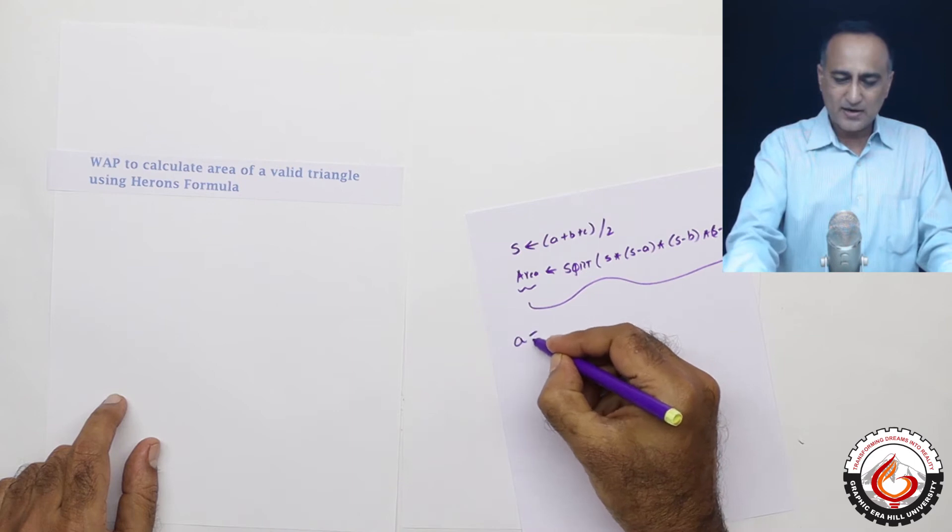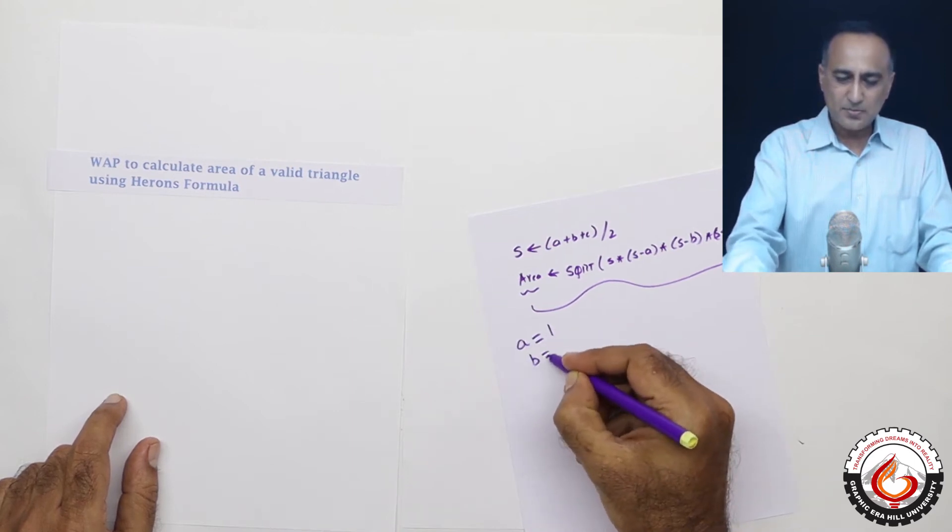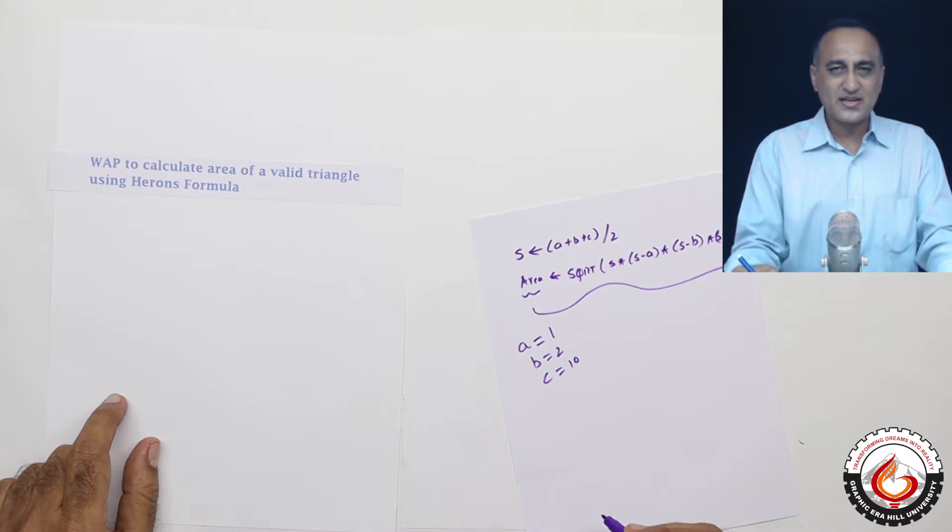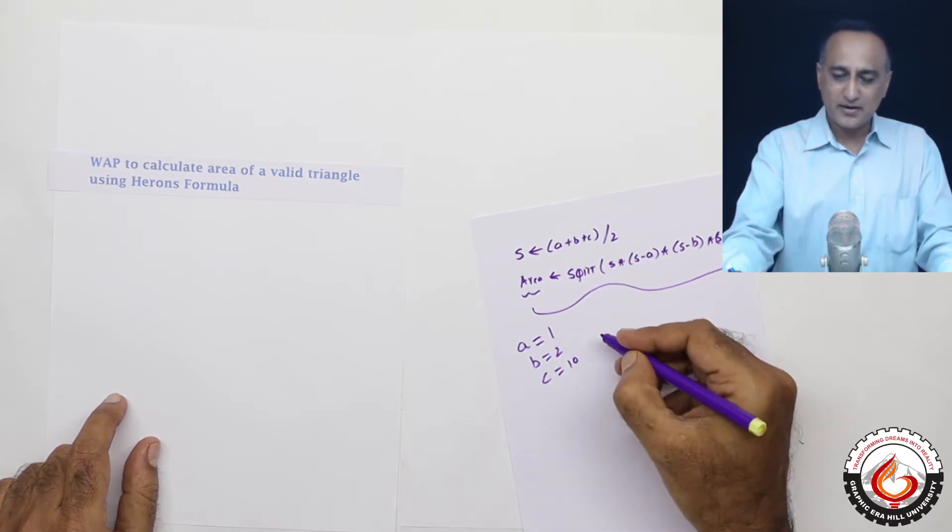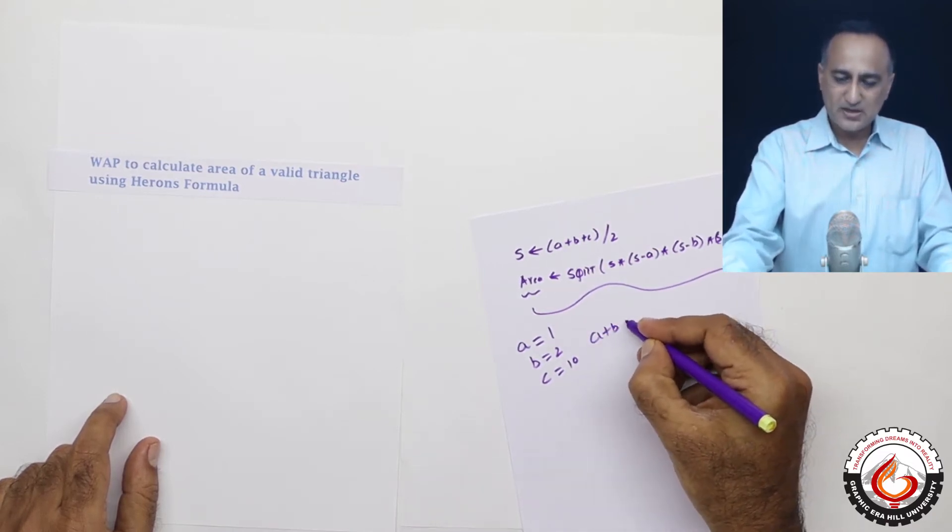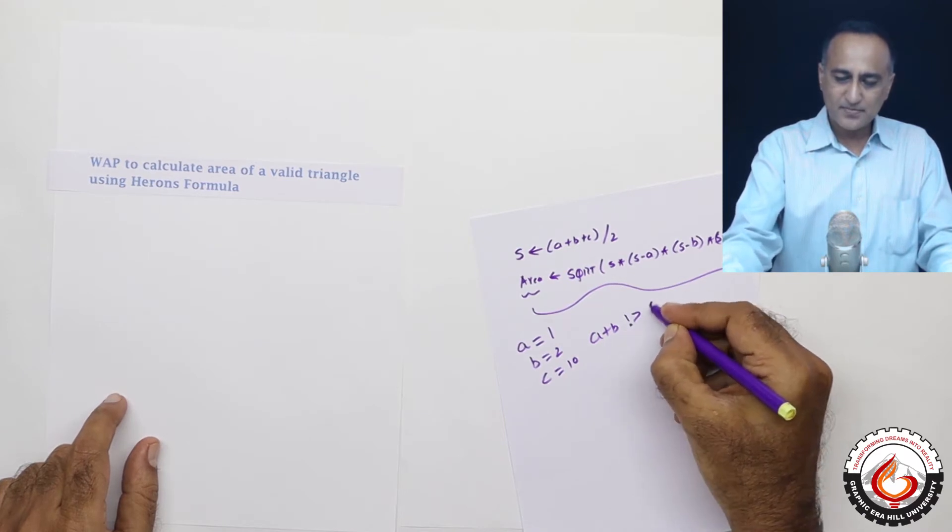Suppose I have a triangle where A is 1, B is 2 and the third side C is 10. This is not a valid triangle because A plus B is not greater than C.